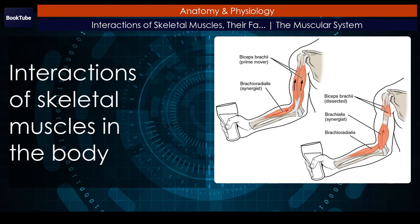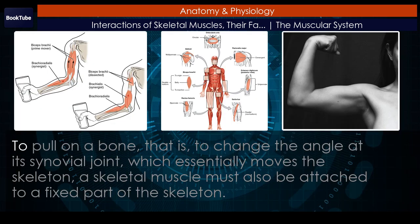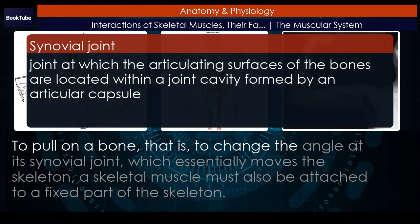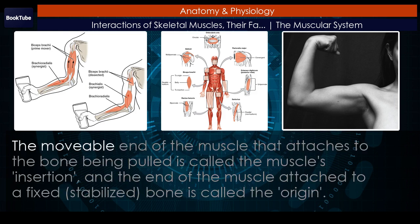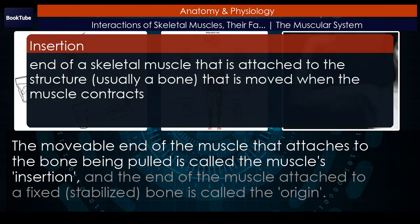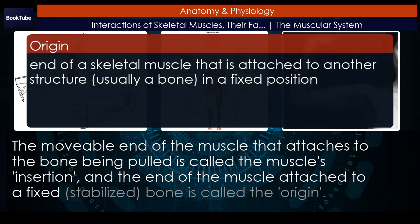Skeletal muscles in the body pull on a bone — that is, to change the angle at its synovial joint, which essentially moves the skeleton. A skeletal muscle must also be attached to a fixed part of the skeleton. The movable end of the muscle that attaches to the bone being pulled is called the muscle's insertion, and the end of the muscle attached to a fixed, stabilized bone is called the origin.